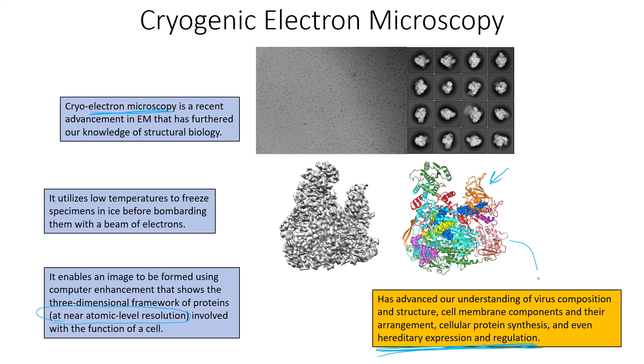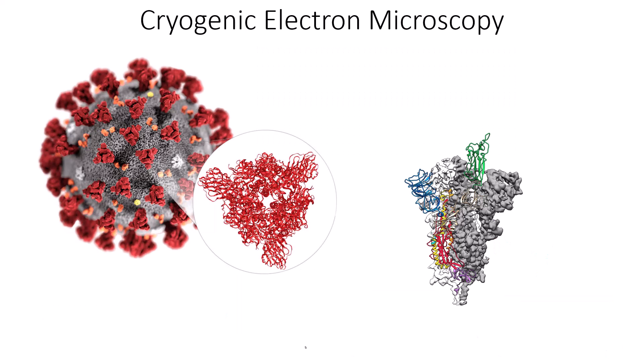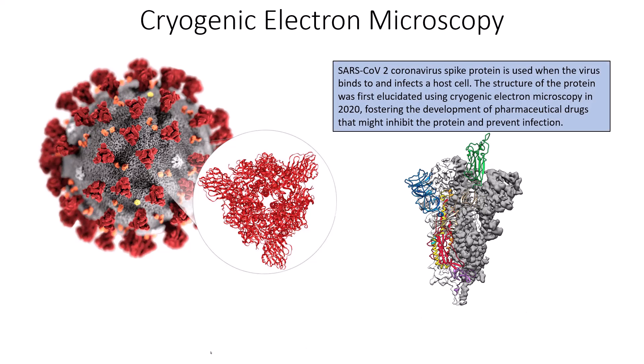Another example using cryogenic electron microscopy is with COVID-19. The SARS-CoV-2 coronavirus spike protein is used when the virus binds to and infects a host cell. The structure of this protein was first elucidated using cryogenic electron microscopy in 2020, fostering the development of pharmaceutical drugs that might inhibit the protein and prevent infection. This is the actual 3D conformation of that spike protein — the exact protein the coronavirus uses to infect the host.